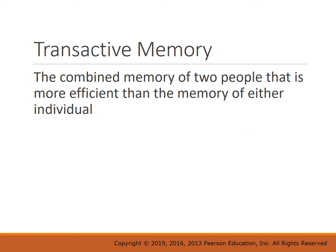There's something called transactive memory — the idea that the combined memory of two people is more effective and efficient than the memory of either individual. Harnessing that transactive memory will result in better decision making for the group.